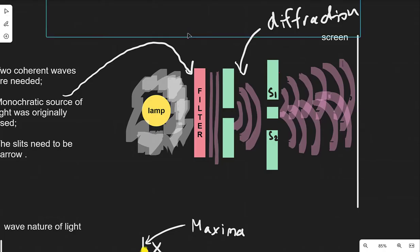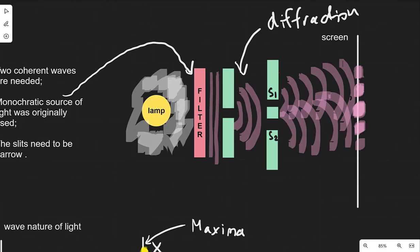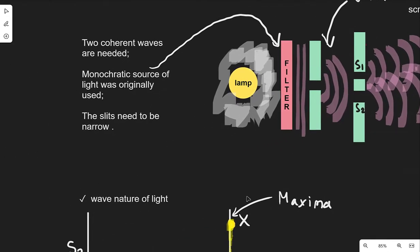If a peak meets another peak, then we're going to get constructive interference, which will essentially be a bright spot. And if a peak meets a trough, then all the light will cancel. So we're going to get a series of maxima and minima in our interference pattern. This is pure wave-like behaviour, as explained in the superposition video which is also part of this playlist. This conclusively proved that light had wave-like properties.